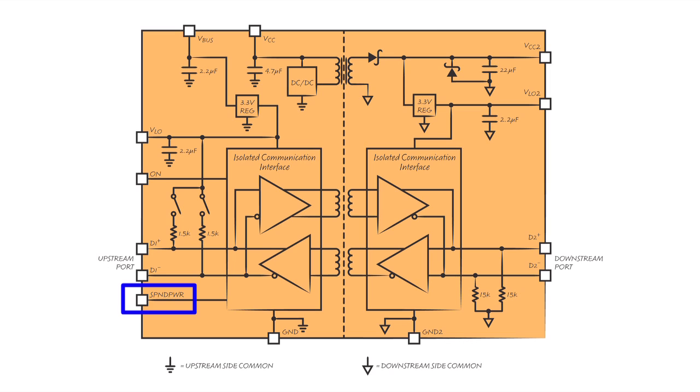This will allow LTM2884 to draw only 1.5 mA and suspend when VBUS and VCC are tied together. With VCC2 unpowered, the isolated side cannot communicate new connection, disconnection or remote wake-up functions. On a resume from the host, the isolated side will recover power but will require re-enumeration by the host.